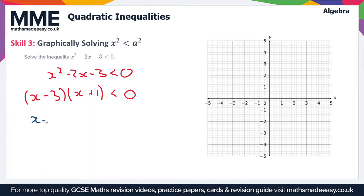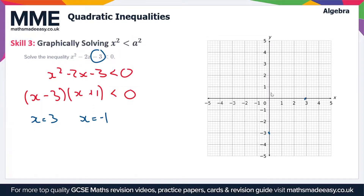From the factorized form we can sketch the graph. There's going to be a root at x equals 3 and a root at x equals minus 1, and the graph is going to cross the y-axis at minus 3. The roots are where the graph crosses the x-axis, so this is enough information to draw the graph. We mark the y-intercept and the two x-intercepts, ending up with a symmetric curve.